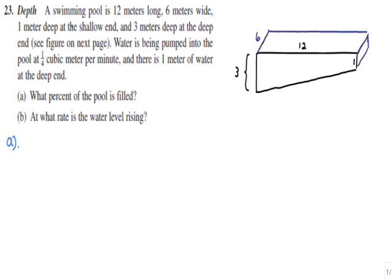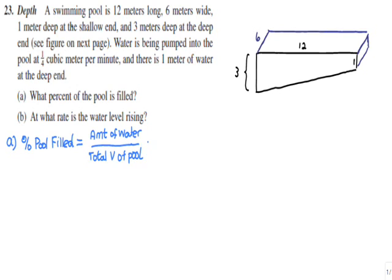To figure out the percentage of the pool filled, we take a fraction with a numerator representing the amount of water and a denominator representing the total volume of the pool, then multiply by 100. It will probably be easier to start with the total volume of the pool — a straightforward geometry question, as long as we know the formula for the volume of a trapezoidal prism.